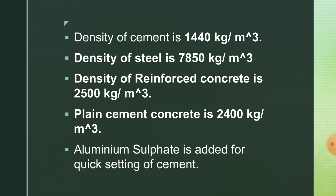Aluminum sulfate is added for quick setting of cement. Calcium chloride is also used to shorten the time of setting or increase the rate of hardening or strength development. These are called accelerators. Whereas retarders are used to delay the setting time of cement — examples include gypsum, sugar, and carbohydrates.